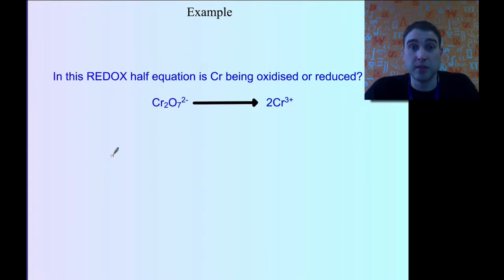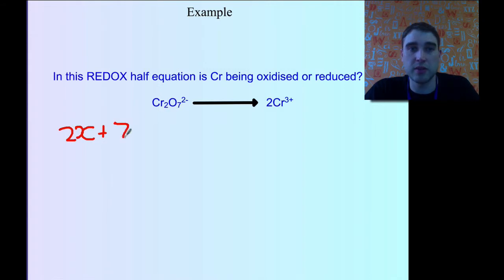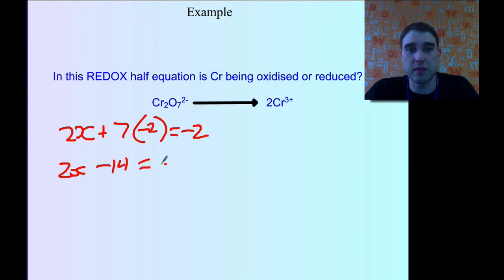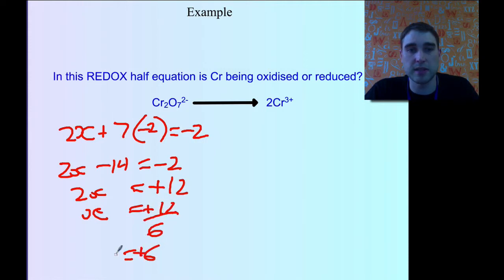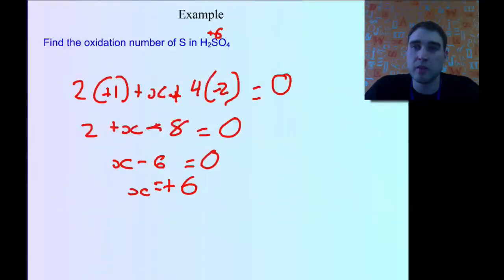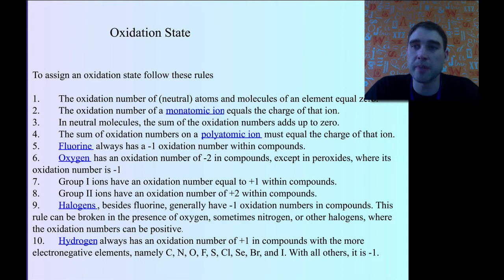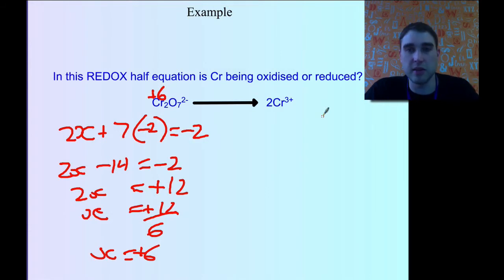Now let's figure out whether chromium is being oxidized or reduced. We'll find the oxidation number of chromium on both sides. We have 2 chromiums, so 2X, and 7 oxygens: 7 times minus 2. That equals minus 2 (the charge). So 2X minus 14 equals minus 2; add 14 to both sides: 2X equals plus 12, so X equals plus 6. On the other side, the oxidation number of a monatomic ion equals the charge of that ion — the chromium ion has a charge of plus 3, so its oxidation number is simply plus 3.